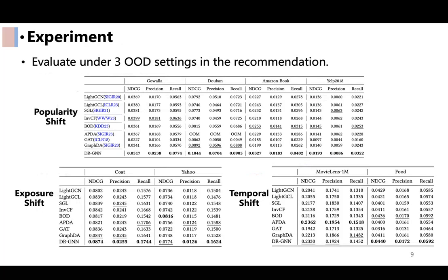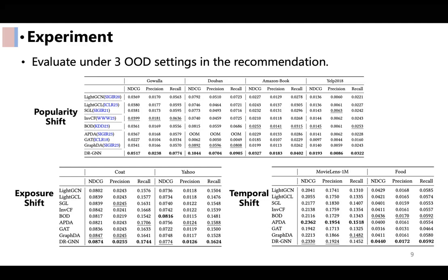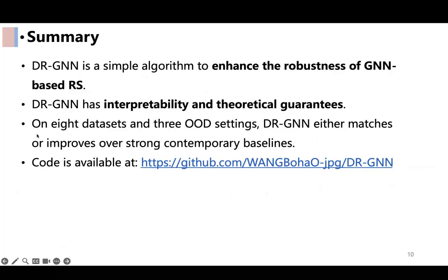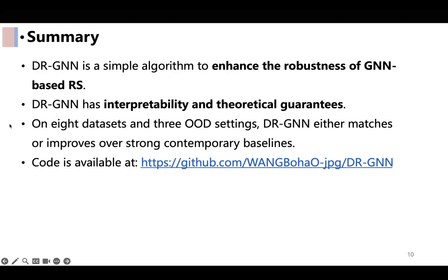We conducted comparative experiments under three common OOD settings. DRGNN achieved promising results, either matching or improving over strong contemporary baselines. Finally, to make a short summary: DRGNN is a simple but effective algorithm to enhance the robustness of GNN-based recommendation systems and has theoretical guarantees.